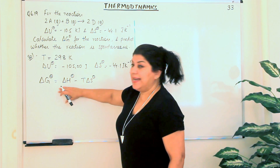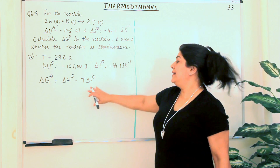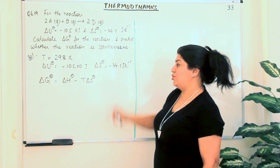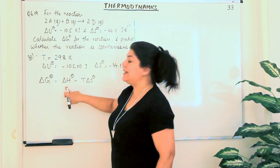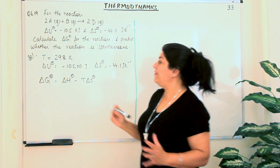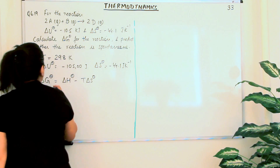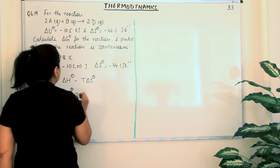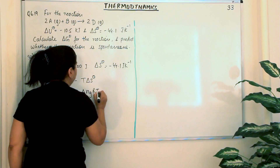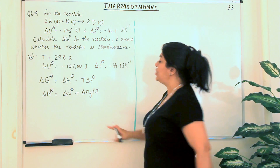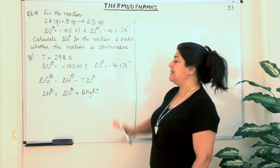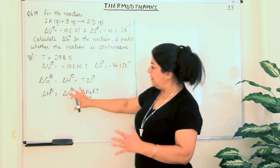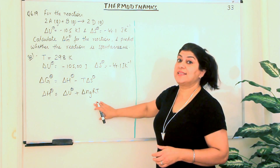Delta H is the change in enthalpy, T is the temperature at which the reaction is taking place — 298 Kelvin — and delta S is the change in entropy. But we have been given delta U and not delta H. There is another equation that relates delta U to delta H: delta H⁰ equals delta U⁰ plus delta Ng RT, where delta Ng is the change in number of moles of gaseous species, R is the gas constant, and T is the temperature.